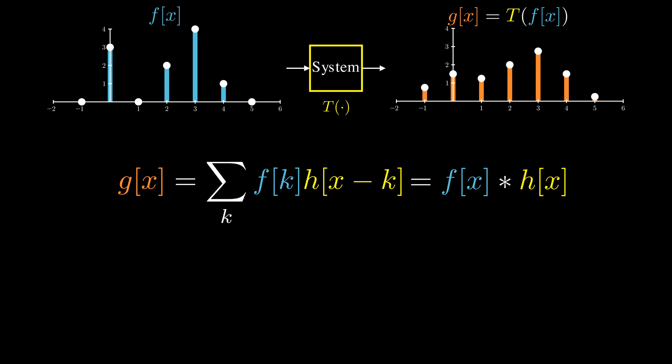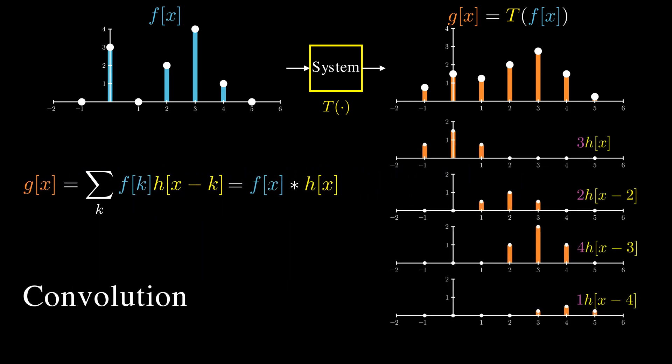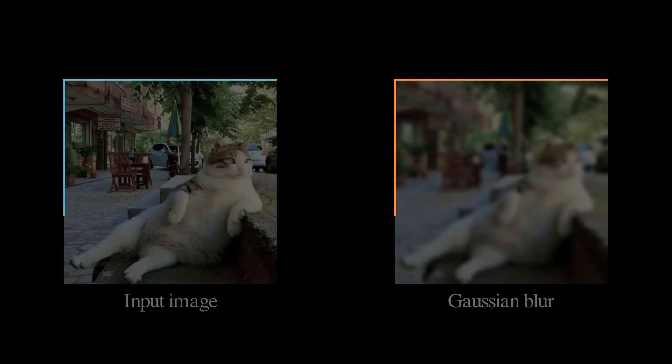So to understand what an LSI system does to any signal, we only need to see what it does to a single impulse. This operation is known as convolution. Here is another way to see it. The output g at position x is a weighted sum of nearby values with weights given by the impulse response. This shows how we can implement a blur filter using convolution.